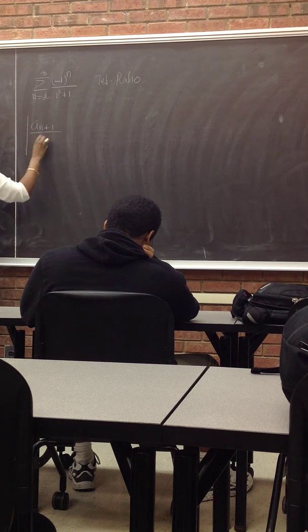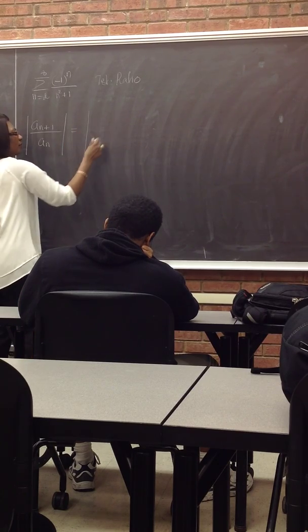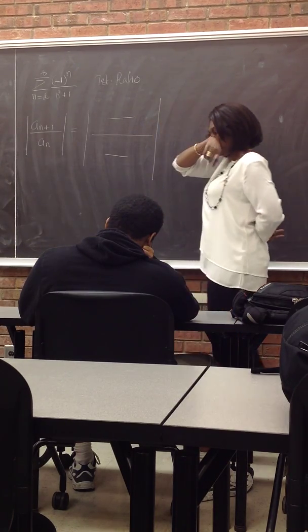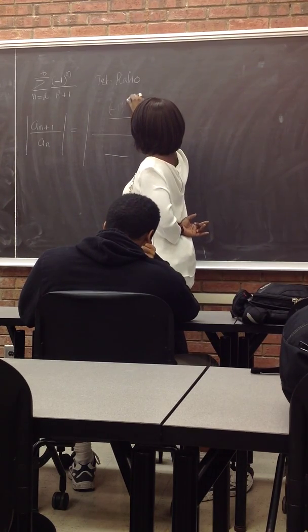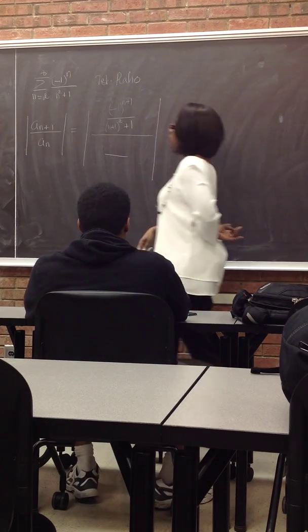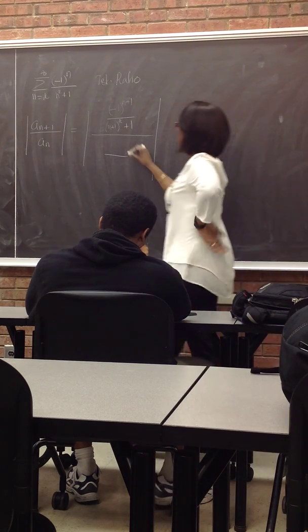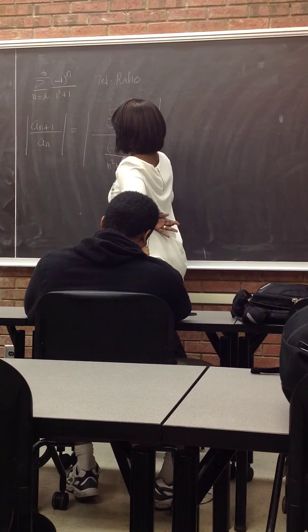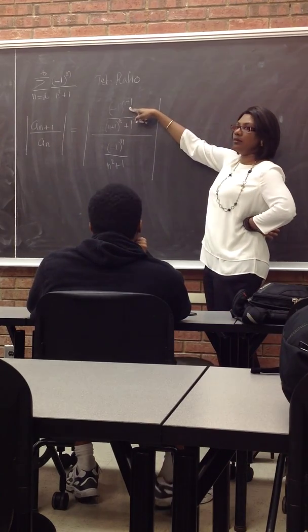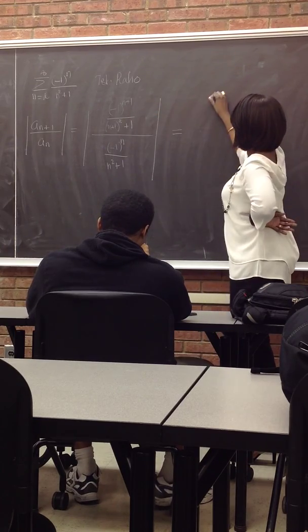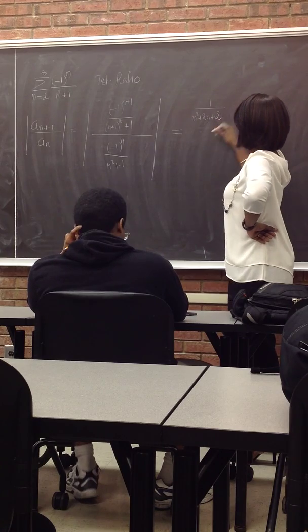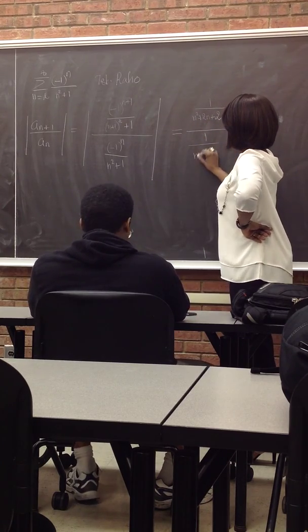What is the absolute value of A7N plus 1 over A7N? What is the value of A7N plus 1 over A7N? Absolute value of minus 1 to the N plus 1 would be what? One. So I have 1 and this is positive. I can find it. N squared plus 2N plus 1 plus 1 would be plus 2. And this one's absolute value becomes 1 over N squared plus 1.